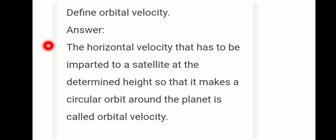Define orbital velocity. Answer: The horizontal velocity that has to be imparted to a satellite at the determined height so that it makes a circular orbit around the planet is called orbital velocity.